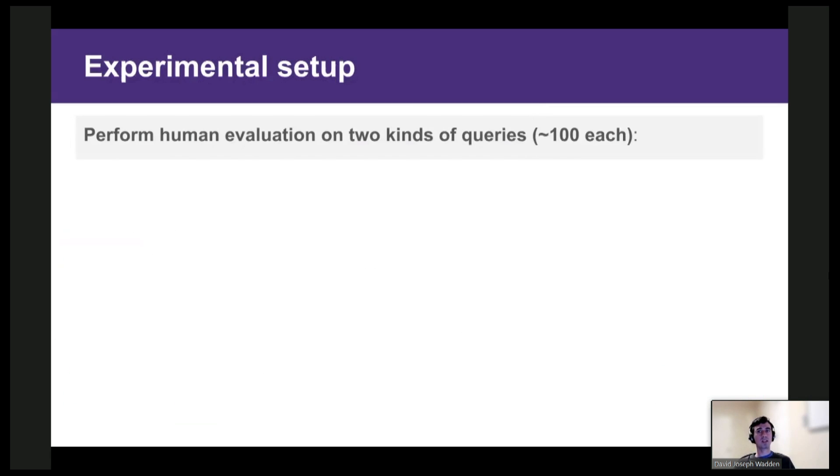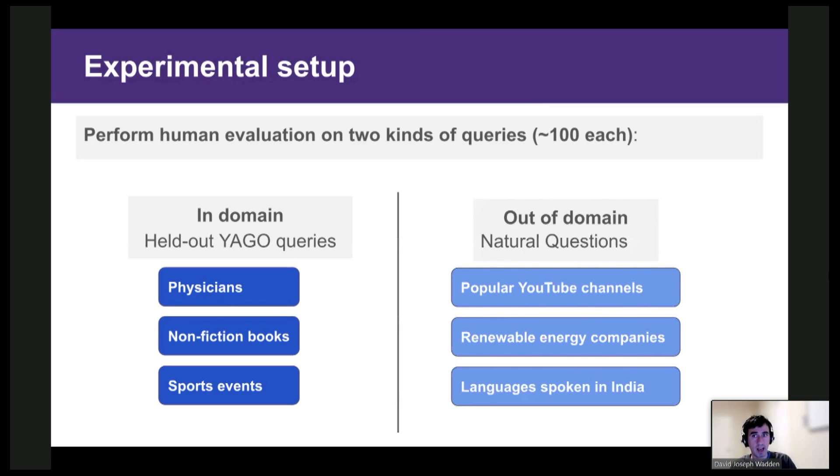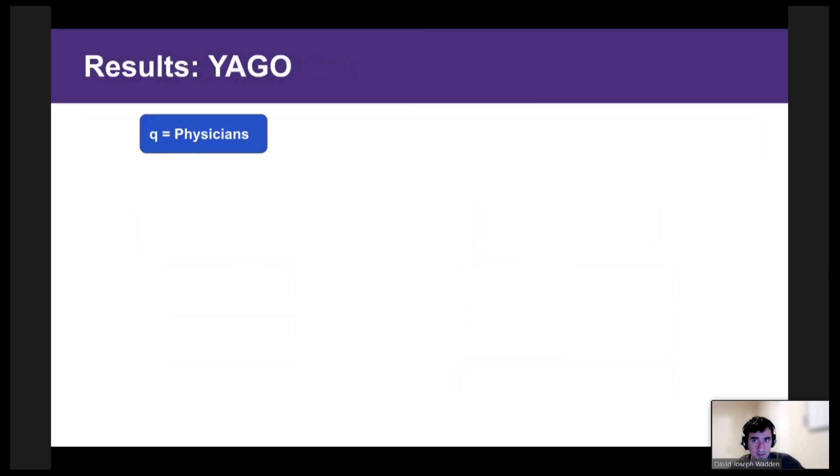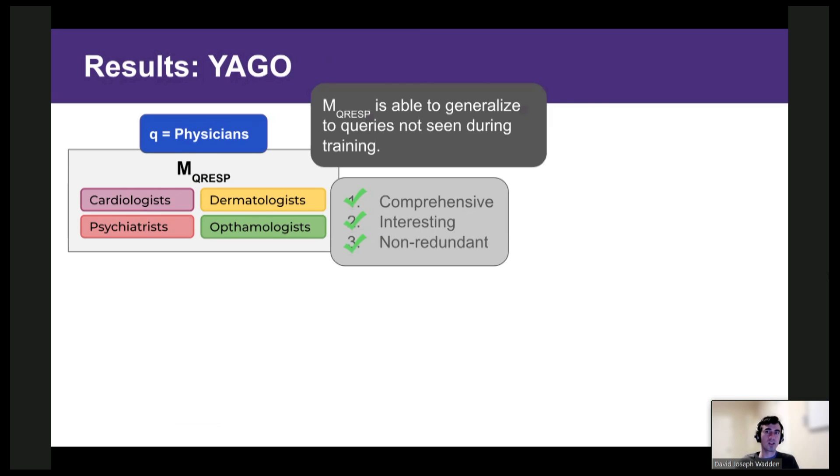And we're going to compare outputs for two different query distributions. First, we'll look at predictions on held-out YAGO queries, which can be thought of as in-domain. And then we'll look at out-of-domain queries, which I selected from the natural questions dataset, things like popular YouTube channels. So I'll start with YAGO. Here I'm showing predictions on a query for physicians. And we see that the QRESP model generates a high-quality refinement set indicating four common medical specialties. So this suggests that our model has learned to generate good refinements for queries which it didn't see during training.